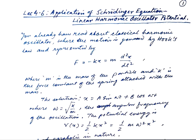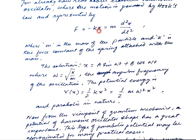Before starting the quantum case, let us first review it with Hooke's law. If you hang a body with spring constant k and displace it by an amount x, this gives an oscillatory motion. The solution is x equals to a·sin(ωt) + b·cos(ωt), where ω is the angular frequency represented as √(k/m). The potential energy for the oscillating particle is (1/2)kx² = (1/2)mω²x², which is parabolic in nature.